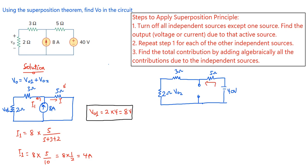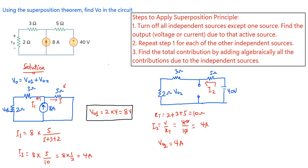To find V02 we need the current through the circuit — let's call it I2. All the resistors are in series, so the total resistance is 2 + 3 + 5 = 10 ohms. The current I2 = V / RT = 40 / 10 = 4 amperes. Therefore V02 = 4 amperes × 2 ohms = 8 volts.